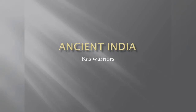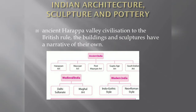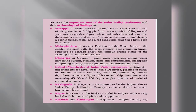Ancient Indian history covers art, culture, literature, and architecture. The chart shows the major periods: Mauryan art, Harappan art, Post-Mauryan art, Gupta art, South Indian art, medieval, Delhi Sultanate, Mughal art, and modern art.